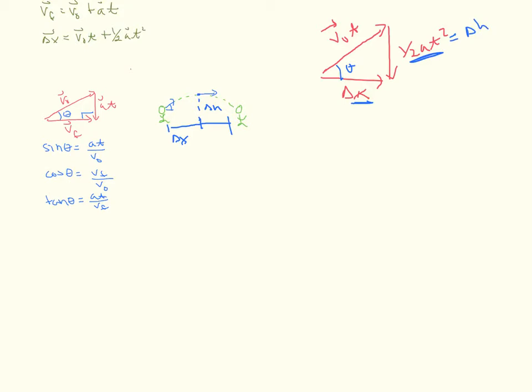So again, if I know the angle, cosine theta here is delta X over v naught t. So if I know something about the initial velocity, I can tell you something about the distance that I traveled. Sine theta is your half at squared over your v naught t. So if this is acceleration due to gravity, then I can tell you something about the time.